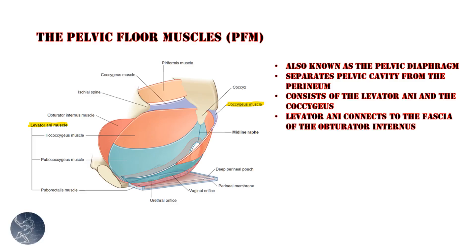The pelvic floor is a group of muscles that form a bowl-like shape that fills the space between the pubic arch and the coccyx. The pelvic floor is also sometimes called the pelvic diaphragm, because in relation to how the abdominal diaphragm separates the thoracic cavity from the abdominal cavity, the pelvic diaphragm separates the pelvic cavity from the perineum.